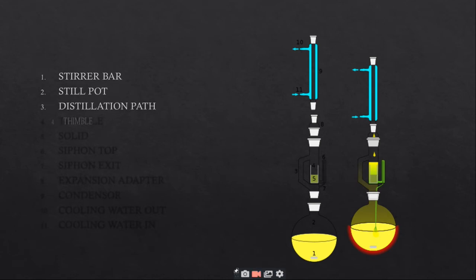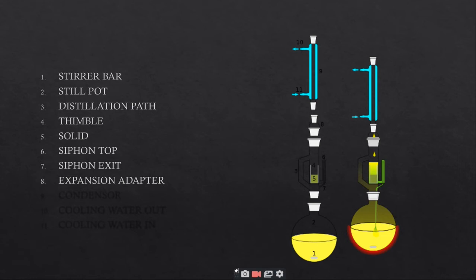Number three shows distillation path. Number four is thimble. Number five is the point where the solid is loaded. Number six shows siphon top. Number seven is siphon exit.